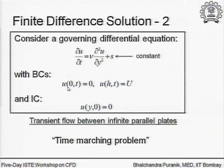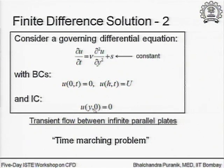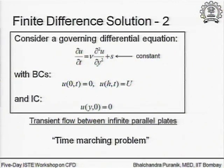The lower plate is stationary, the upper plate is moving at constant velocity capital U, and the initial condition is that everywhere at time equal to zero the velocity is zero. This is what we will call a time evolution problem or time marching problem - starting from the initial condition, we want to find out how the solution evolves as a function of time.